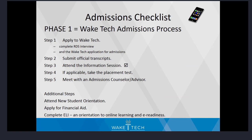The steps to be admitted to Wake Tech Community College are: first, apply to the college at www.waketech.edu. Students who previously attended Wake Tech may also need to reapply if the last term attended was longer than a year ago. Applicants will then need to submit official transcripts from both high school and college, then complete this information session. If needed, the next step is to schedule the college placement test.